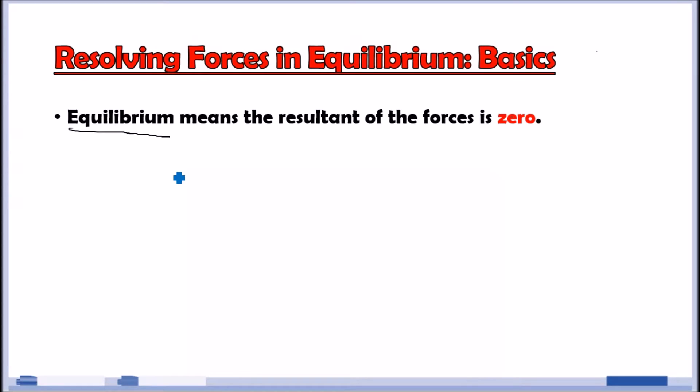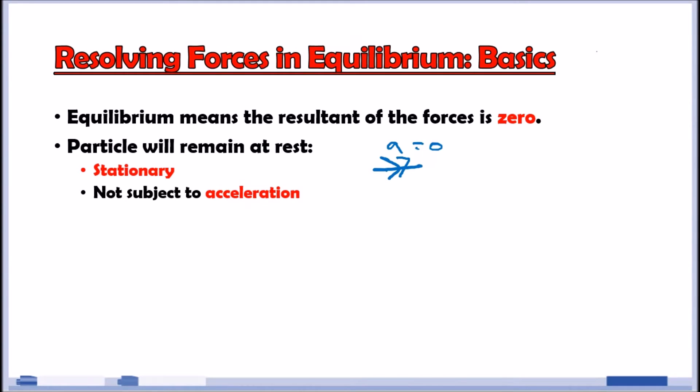A key thing to understand is that in equilibrium, we consider that the force, which usually equals mass times acceleration, would be zero. Because if everything is in equilibrium, this implies that the particle will be stationary, not moving or subject to no acceleration. In other words, this notation would equal zero. Hence, we consider this an equilibrium.